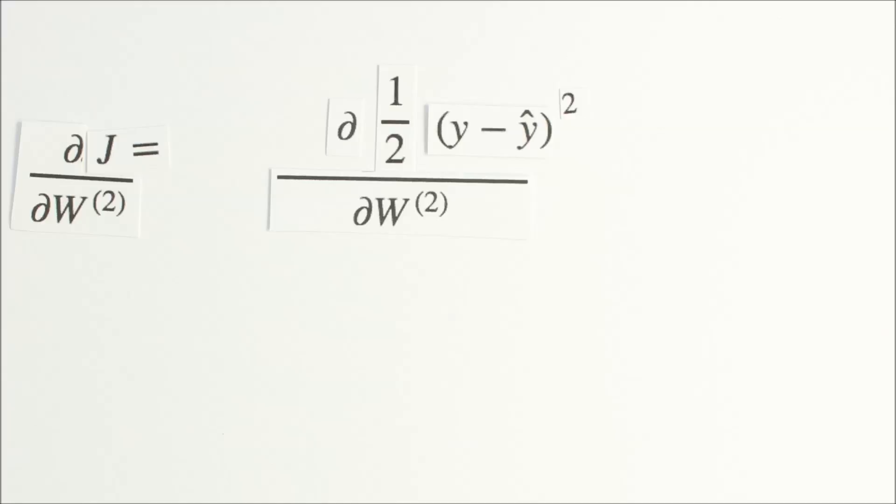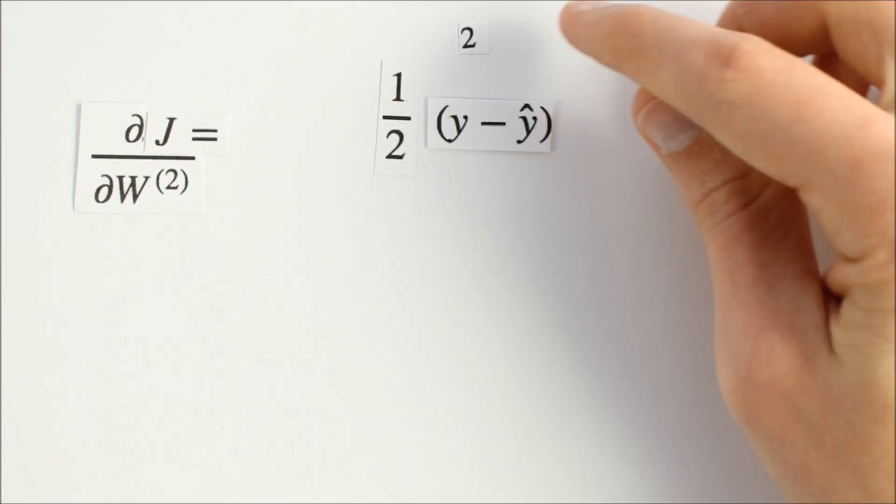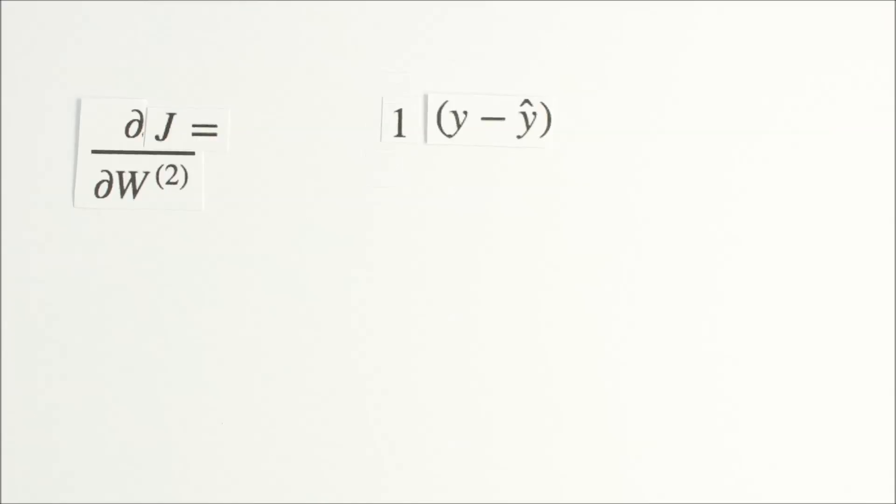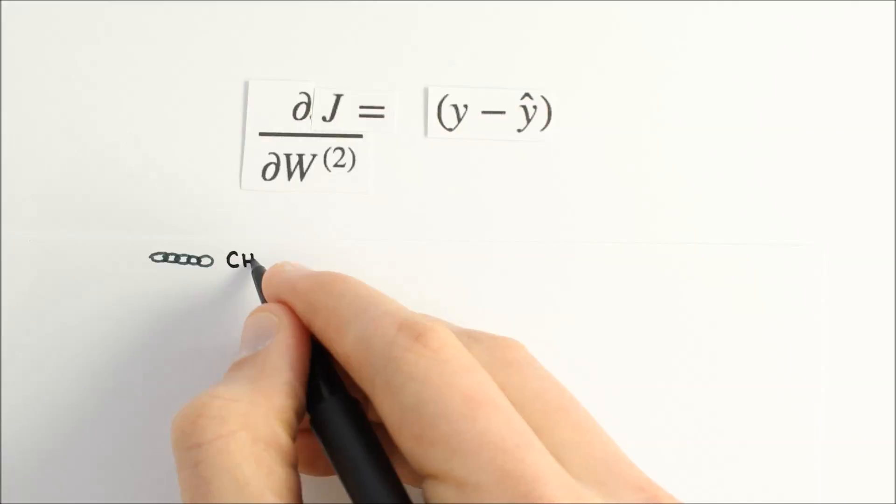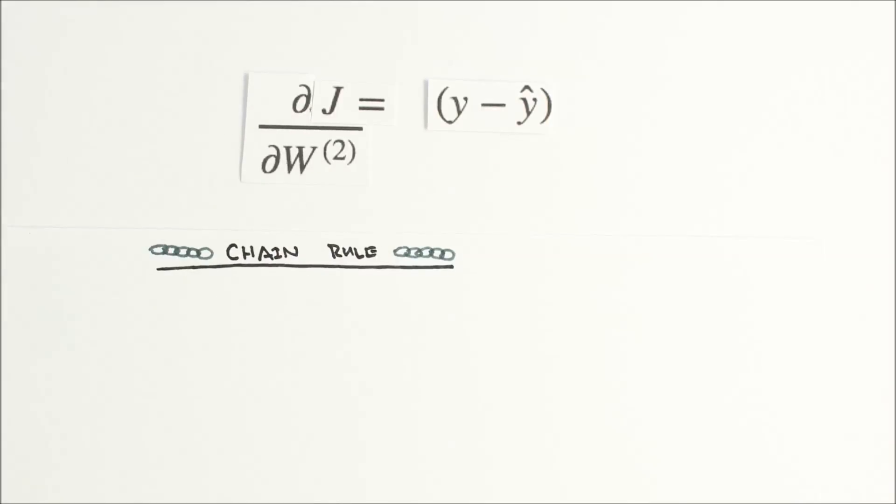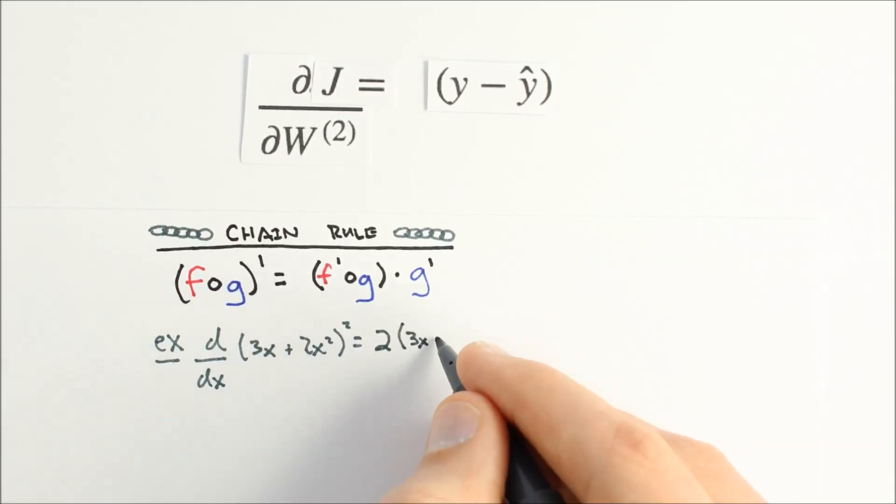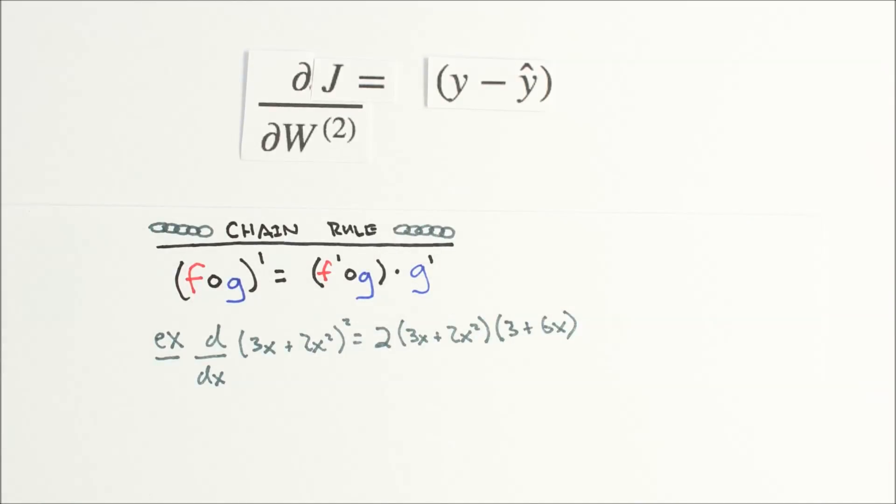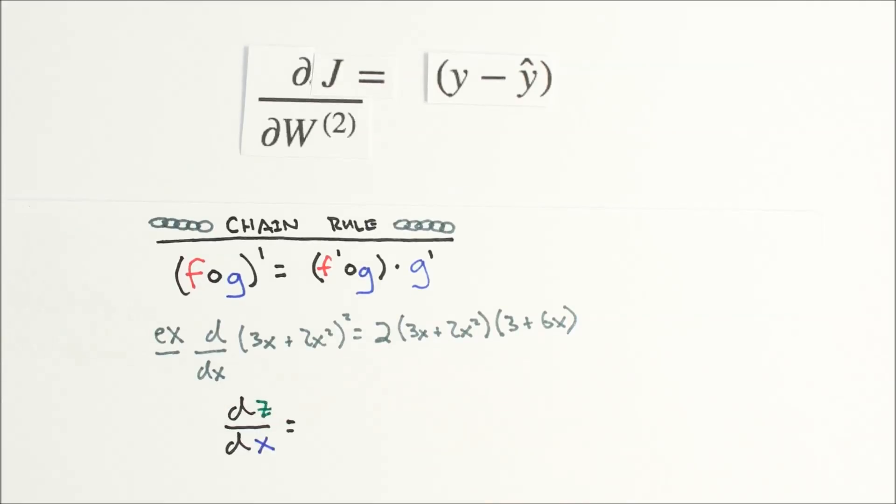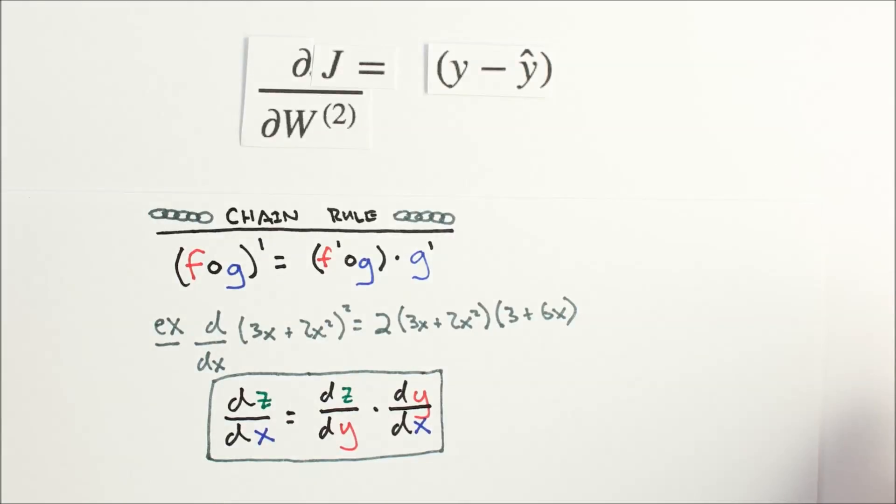We can now evaluate our first derivative. The power rule tells us to bring down our exponent 2 and multiply. To finish our derivative, we need to apply the chain rule. The chain rule tells us how to take the derivative of a function inside of a function, and generally says that we take the derivative of the outside function and multiply it by the derivative of the inside function. One way to express the chain rule is as the product of derivatives. This will come in very handy as we progress through backpropagation. In fact, a better name for backpropagation might be: don't stop doing the chain rule ever.